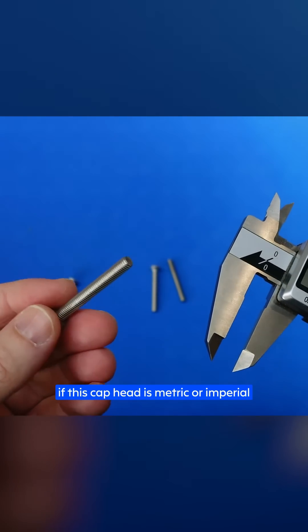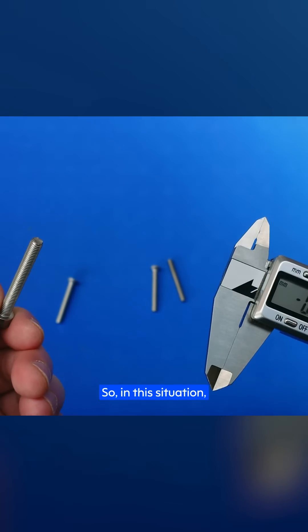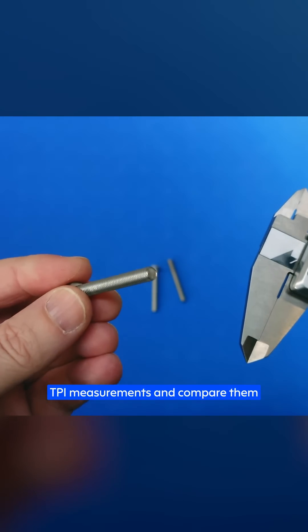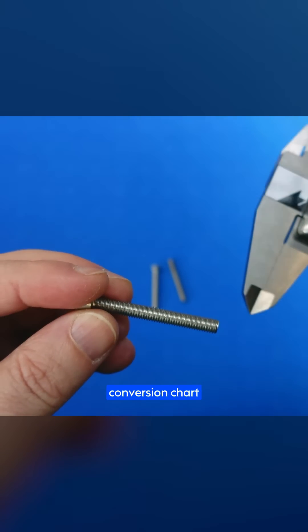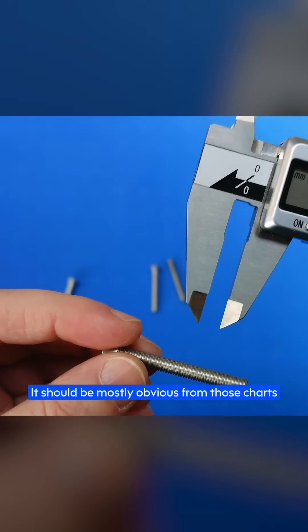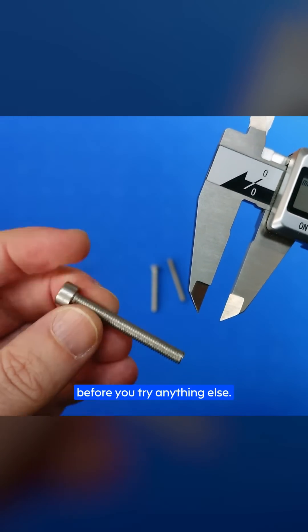We'll approach this as if we don't know if this cap head screw is metric or imperial, to give you the best example of figuring this out from scratch. So in this situation, we want to essentially take both pitch and TPI measurements and compare them to the same metric to imperial conversion chart I spoke about earlier to find the closest match. It should be mostly obvious from those charts which one it'll be. If you're ever unsure, chances are you want to double check your measurements first before you try anything else.